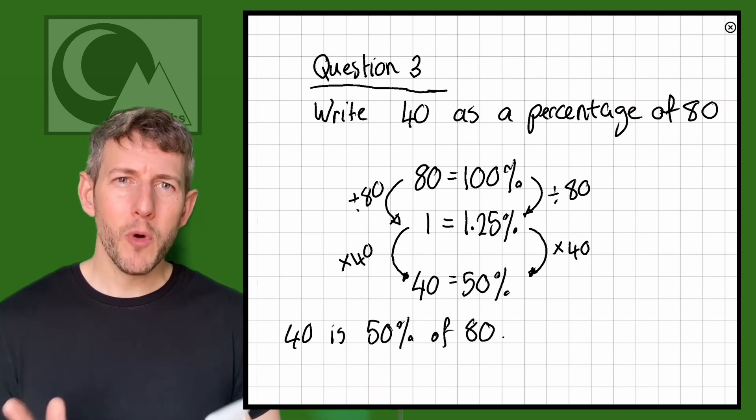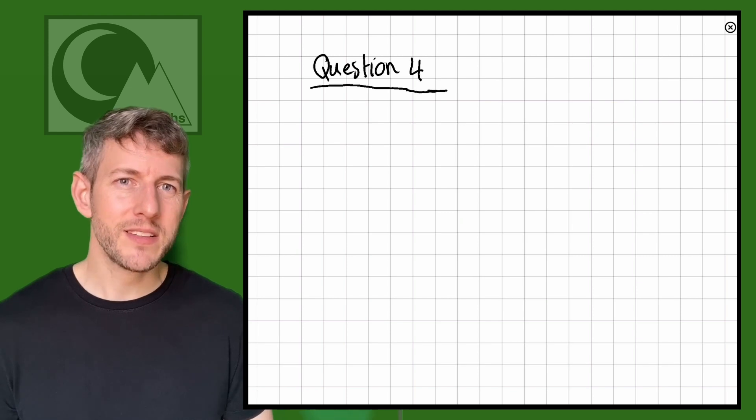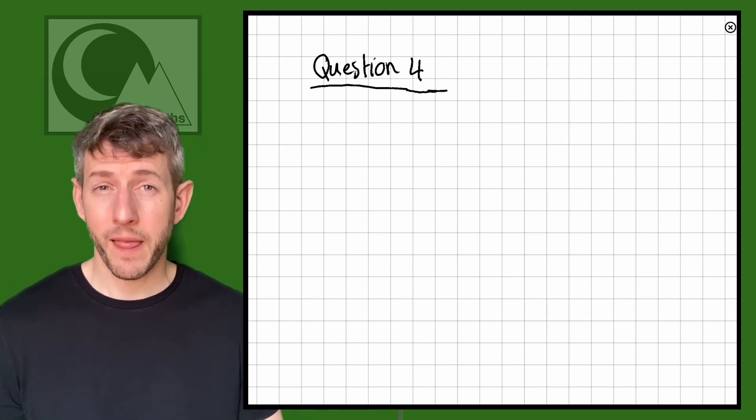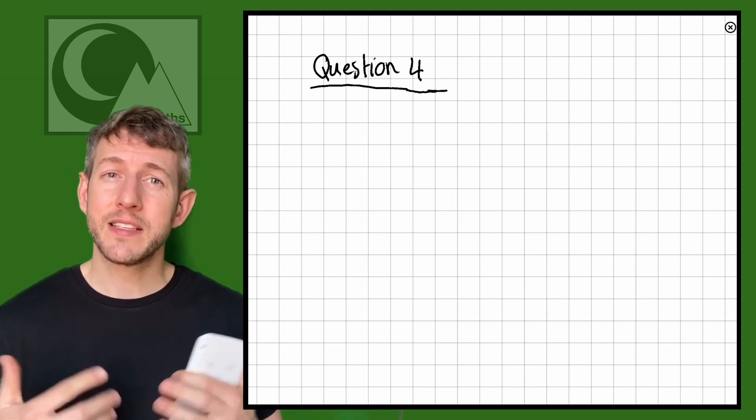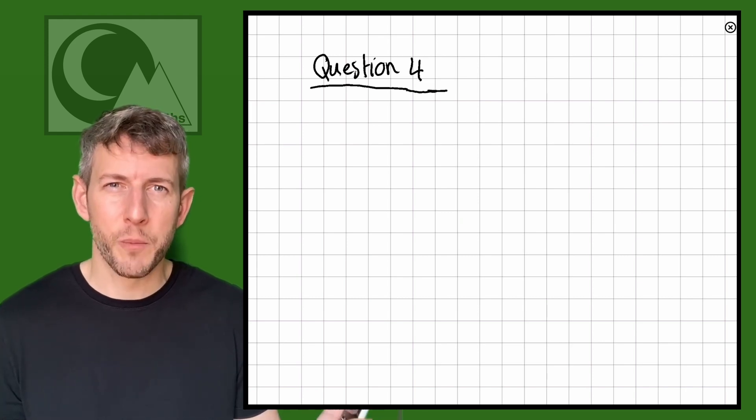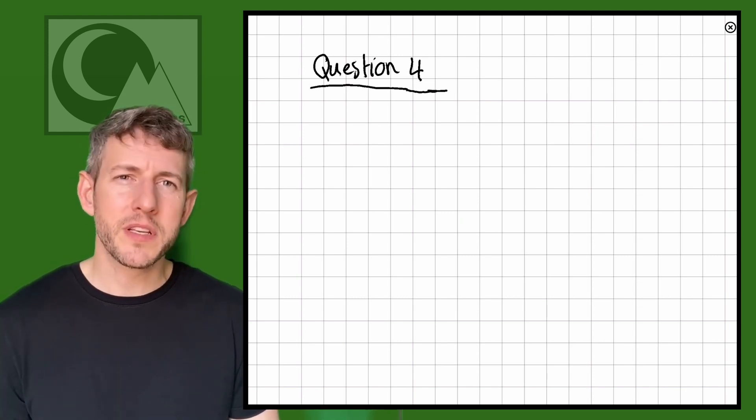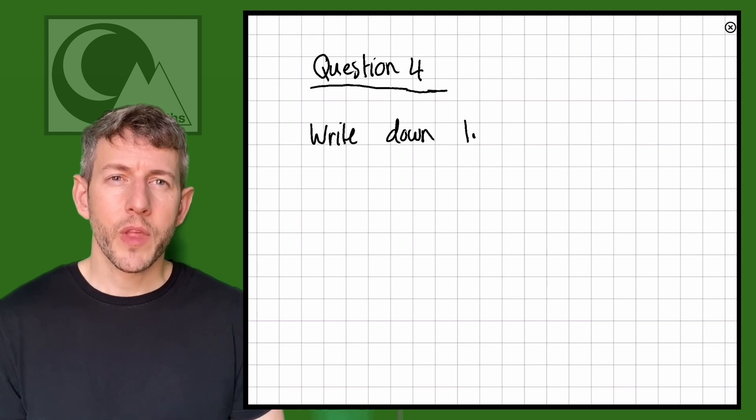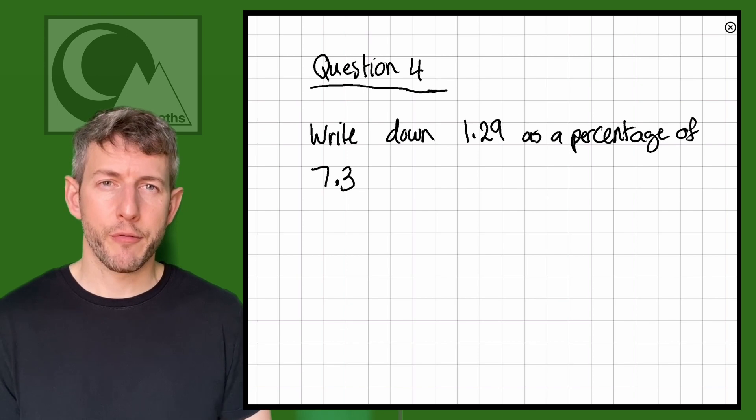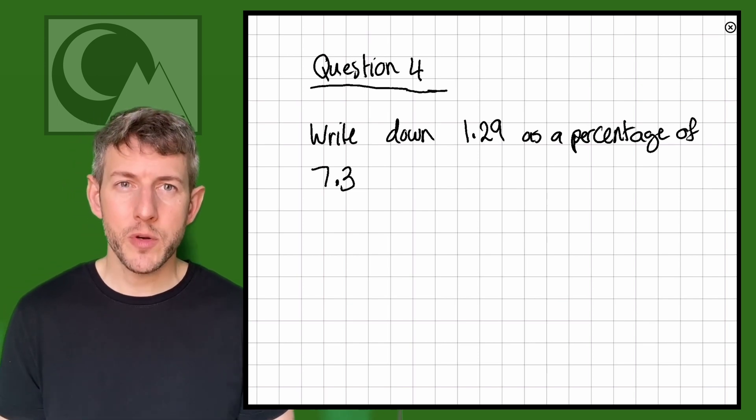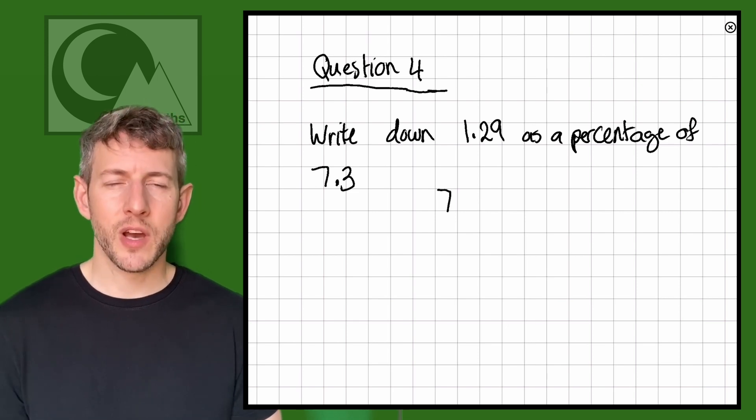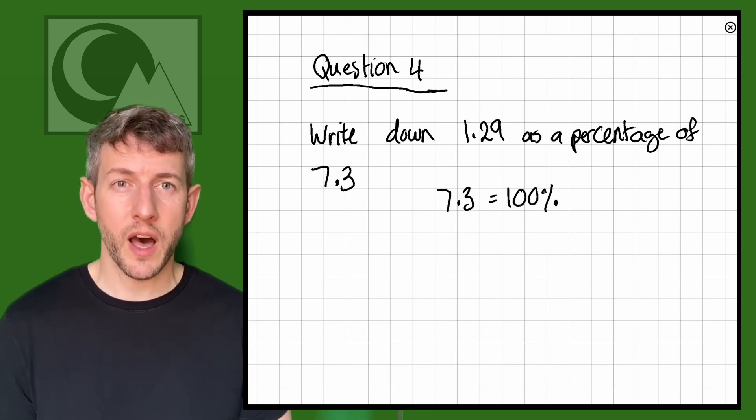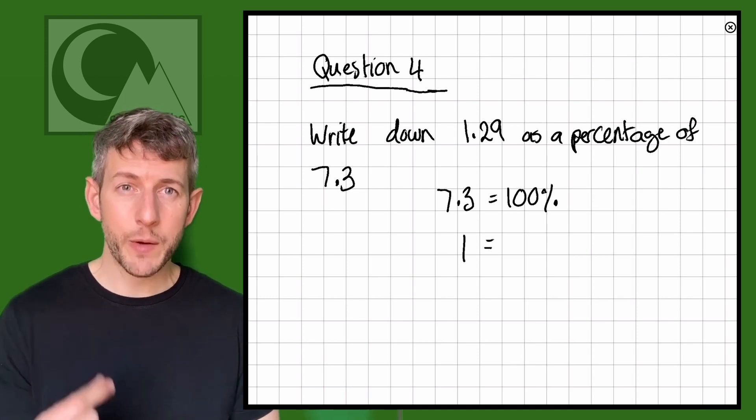Okay, I want to try one more question here that's a little bit more complicated because sometimes we get these values as decimals. Decimals are more complicated because they're just harder to look at, they're harder to read, they're harder to comprehend. So this time, what I'm going to say is write down 1.29 as a percentage of 7.3. So 1.29 as a percentage of 7.3. So this time we've got 7.3 equals 100%. So now I want to find the value of 1.